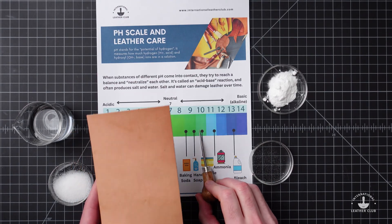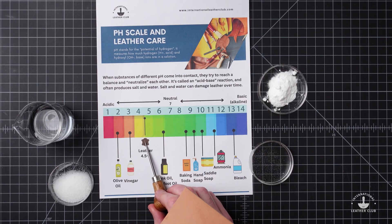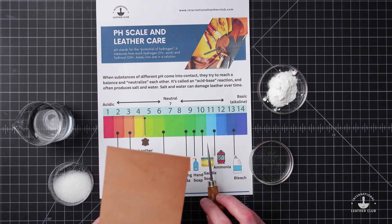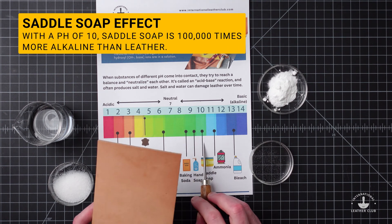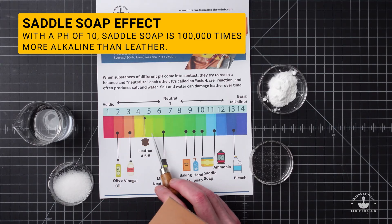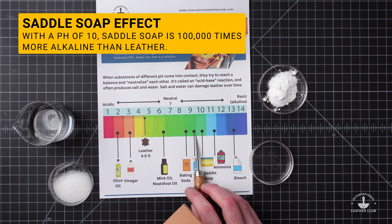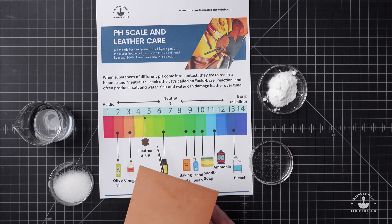If we're using something like saddle soap that's around a pH of 10, and our leather is a pH of around 5, that saddle soap is going to be around 100,000 times more basic than your leather material. Another way to put it: your leather material is going to be around 100,000 times more acidic than your saddle soap.